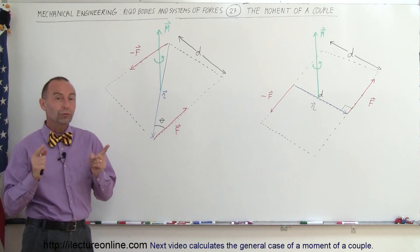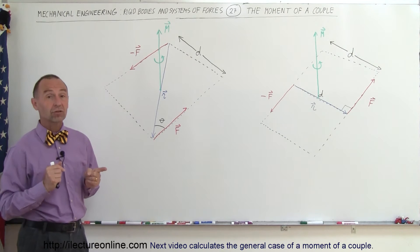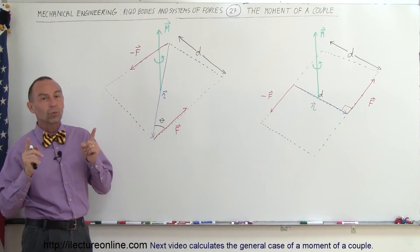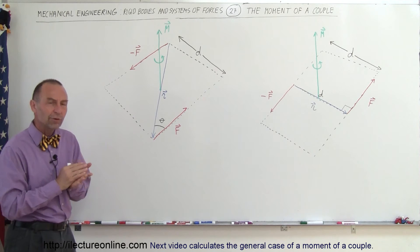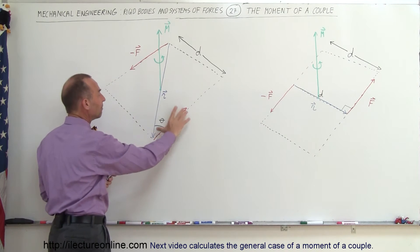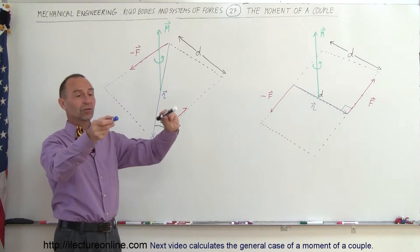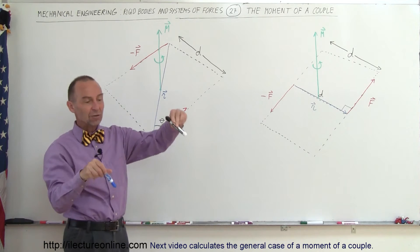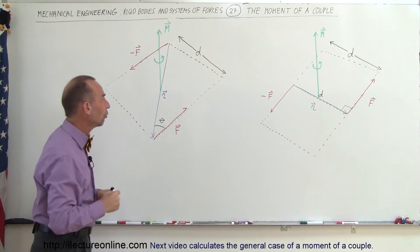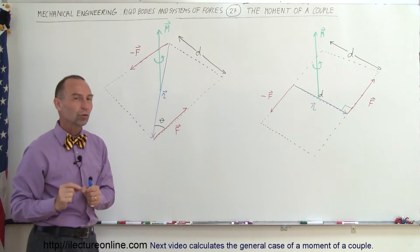A couple refers to two forces that are equal in magnitude and directed in opposite directions. They can be situated in any possible way, but the two forces, regardless of what direction they're pointing to, will always form a plane. It doesn't matter if the forces are oriented like this or in any direction — as long as they're in opposite directions and equal in magnitude, there will be a plane between the two forces. Perpendicular to that plane will have a moment caused by those two forces.